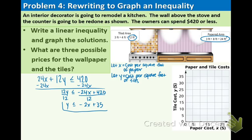So there is our linear inequality. Now, we can tell that the slope is negative 2 over 1 and the b is 35.